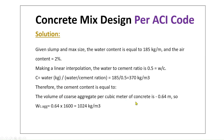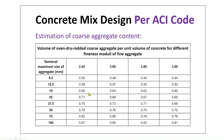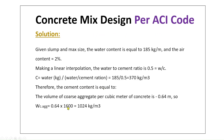The volume of coarse aggregate is the ratio multiplied by the unit weight of coarse aggregate. From the table at nominal maximum size 19 mm and sand fineness modulus 2.6, the ratio is 0.64. Given the unit weight of coarse aggregate is 1,600 kg/m³, the coarse aggregate content is 0.64 × 1,600 = 1,024 kg per cubic meter.